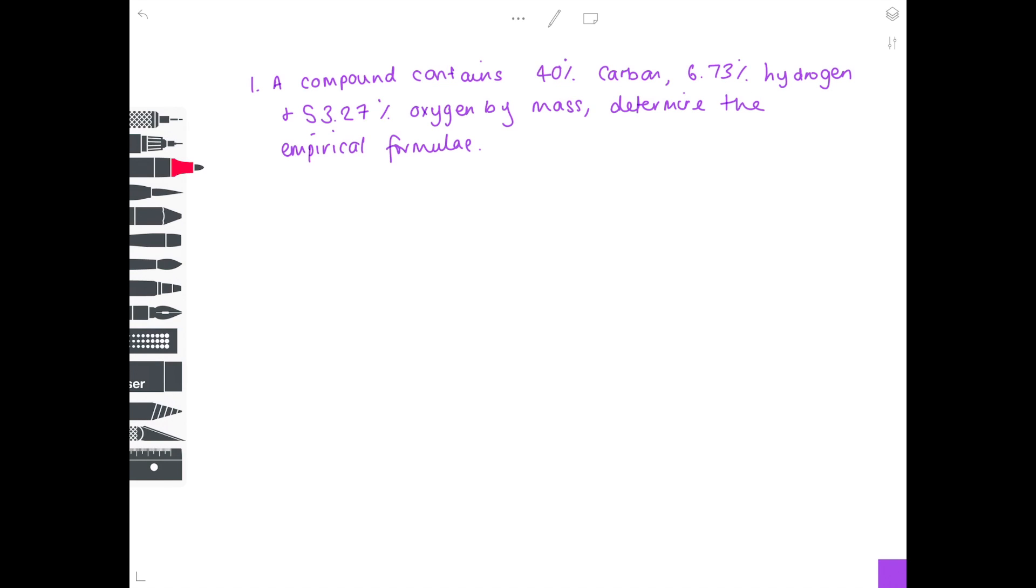So in question one, a compound contains 40% carbon, 6.73% hydrogen, and 53.2% oxygen by mass, determine the empirical formulae. I like to use a table format for my mole calculations. So first of all, start by listing your elements: carbon, hydrogen, and oxygen. Make a table. And you want to write mass, MR, and number of moles down the left-hand side.